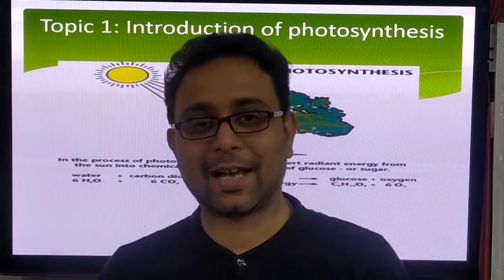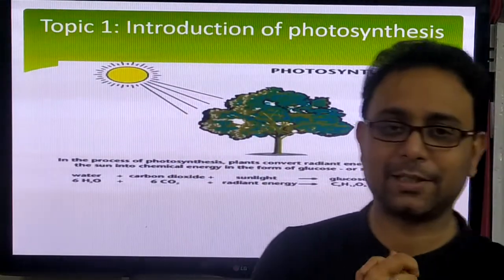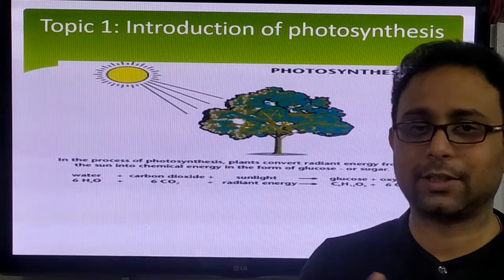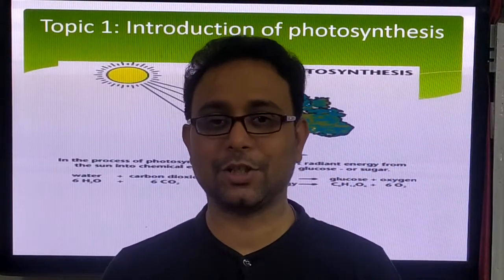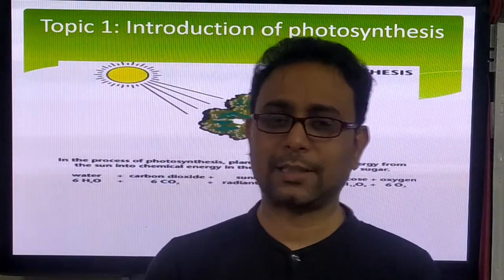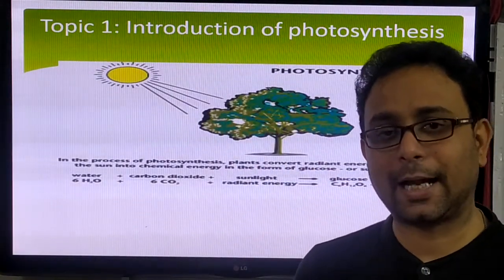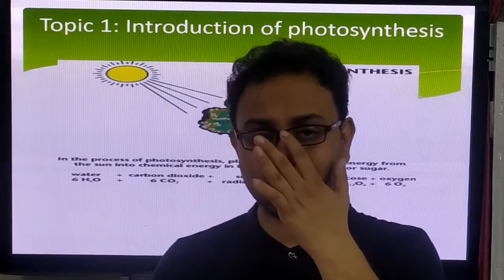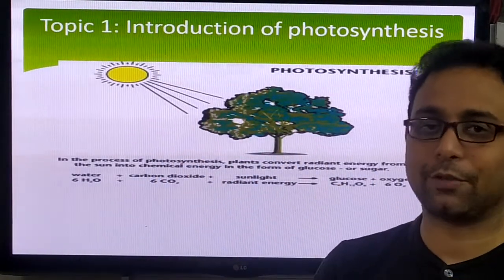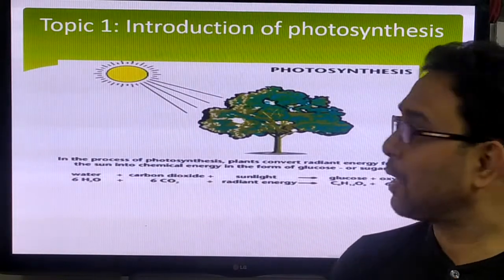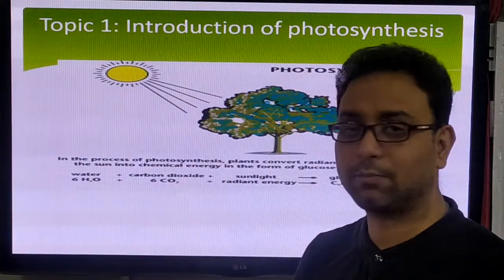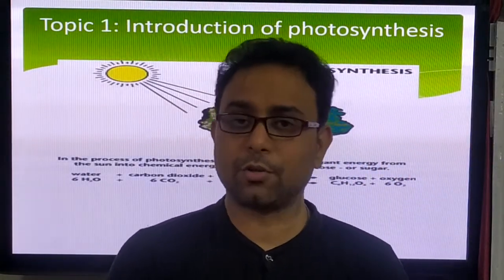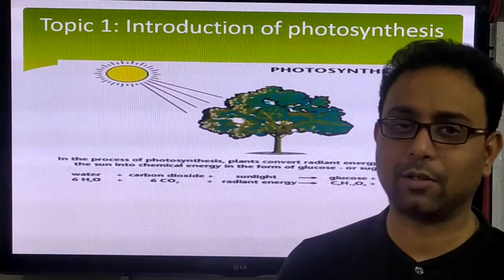Hello my dear students. Today I am going to give a special class to CBC Class 7 students. Last we discussed the most important chapter, that is nutrition in plants — plants can produce their own food, so they are called autotrophs. But today we discuss some details about the photosynthesis process. I welcome all of you to our Obnavasa biology class.